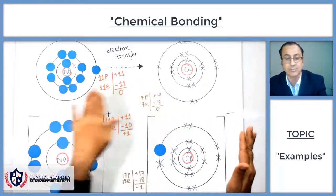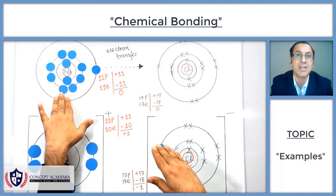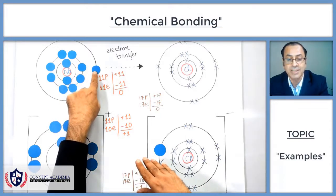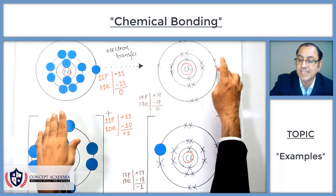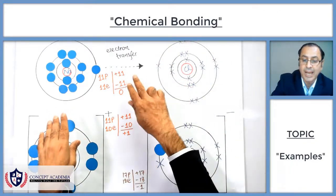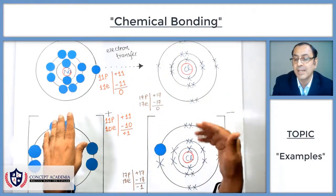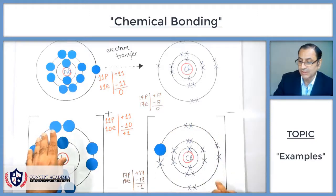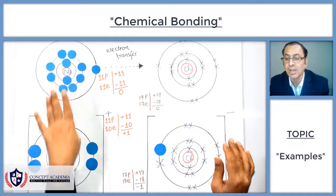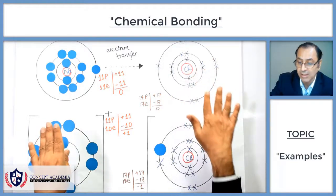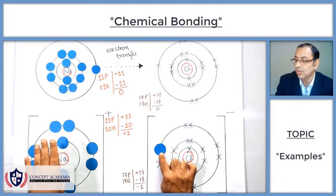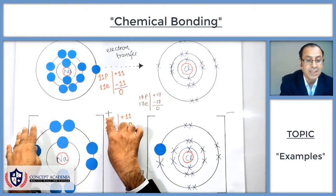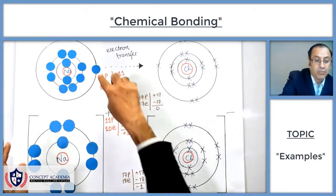For example, sodium is a metal and metals are always ready to give away their electrons. Sodium belongs to group 1, has one electron in its last shell, and is ready to give it away. Chlorine belongs to group 7, has seven electrons in its last shell, and will gain one electron to reach eight. The dot electrons represent sodium and the cross electrons represent chlorine, and chlorine gains one electron to get a negative one charge.